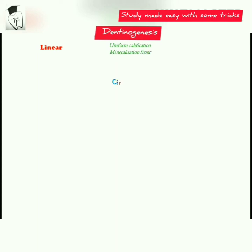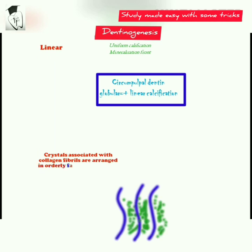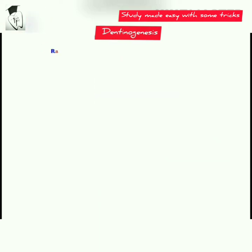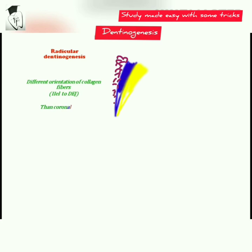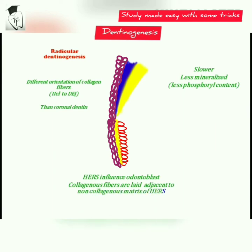When the calcification front appears uniform, it is called the linear pattern. Circumpulpal dentine has both globular and linear calcification. Crystals are deposited as very fine plates of hydroxyapatite on the surface of collagen fibers in ground substance, arranged in orderly fashion with their long axis paralleling the fibrils' long axis. Radicular dentinogenesis is slower and less mineralized due to less phosphoryl content, with different orientation of collagen fibers — parallel to the cemento-dentinal junction. Here, Hertwig's epithelial root sheath influences the odontoblasts, so collagen fibers are laid adjacent to the non-collagenous matrix of Hertwig's epithelial root sheath.